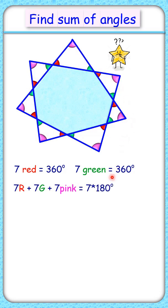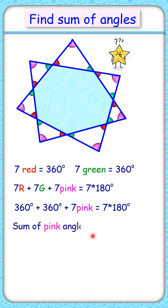Putting 7R and 7G as 360° and solving, we get sum of seven pink angles as 540 degrees. And that's our answer.